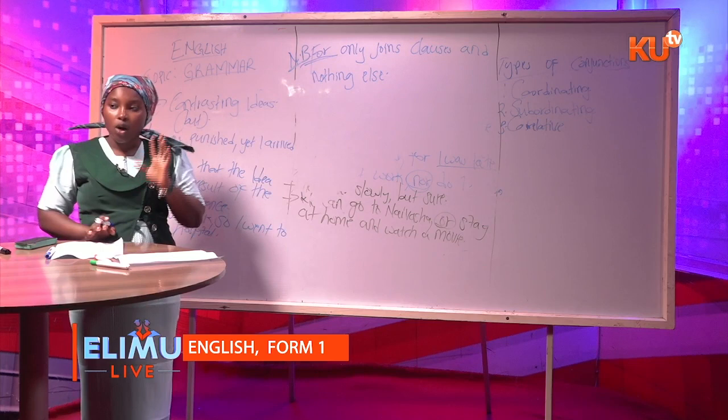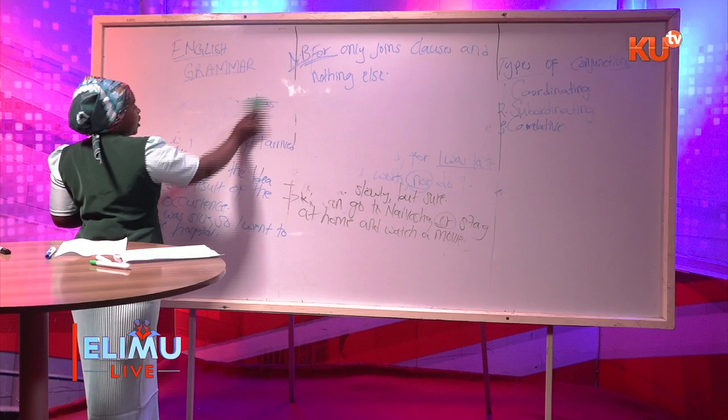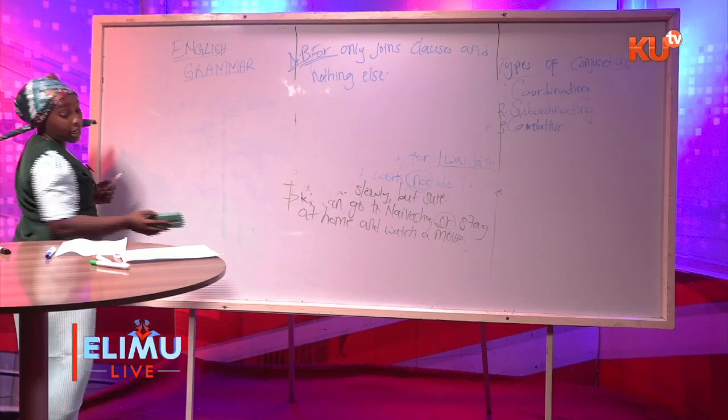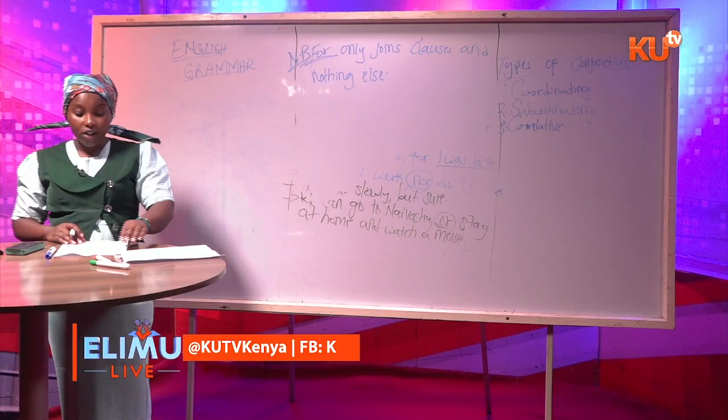Now let's have some sentences and join them using the coordinating conjunctions. You'll see that when you go to other types of conjunctions — the subordinating conjunctions and correlatives — they all behave differently compared to the coordinating conjunctions.